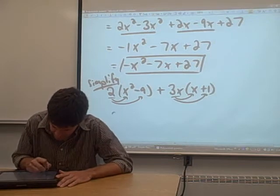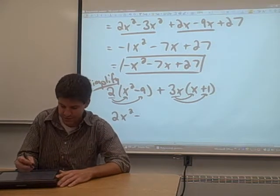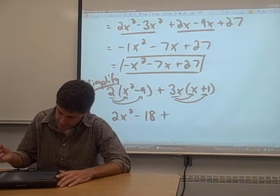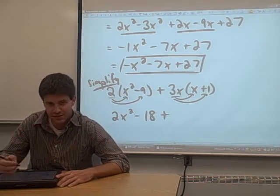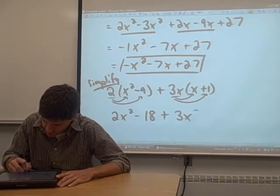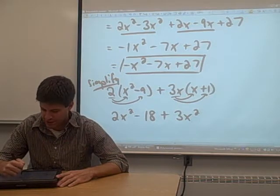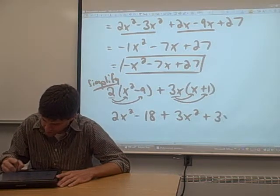When you do that, you get 2x squared minus 2 times 9 is negative 18, plus the 3x times the x is going to give you 3x squared, and the 3x times the 1 is going to give you 3x.